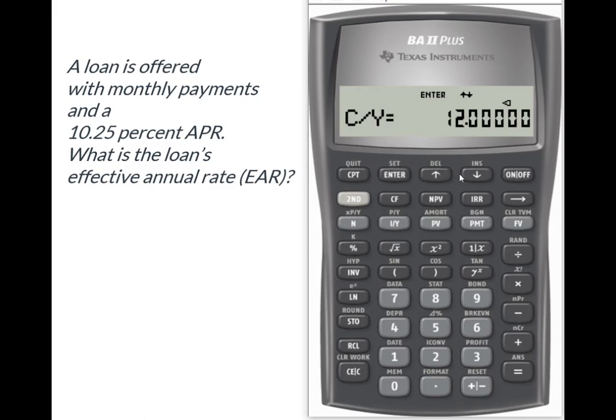Now I've got my 12, so I need to go back up because what I want is my effective rate. To get it to calculate, I simply hit the compute, or CPT, key. It thinks for a nanosecond and tells me it's 10.74551, which I'd round off to 10.75%. So we've converted a 10.25% APR to a 10.75% effective annual rate using the calculator.